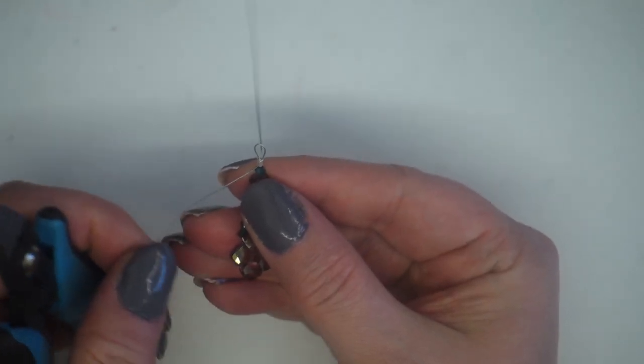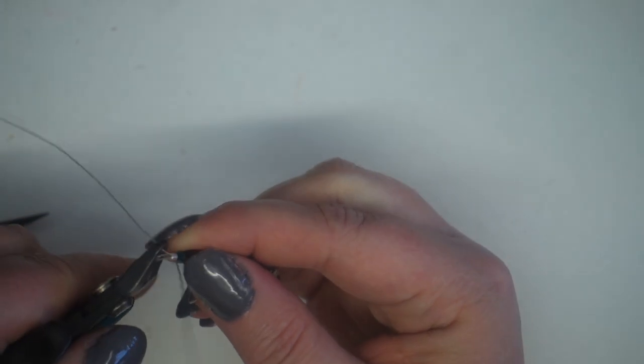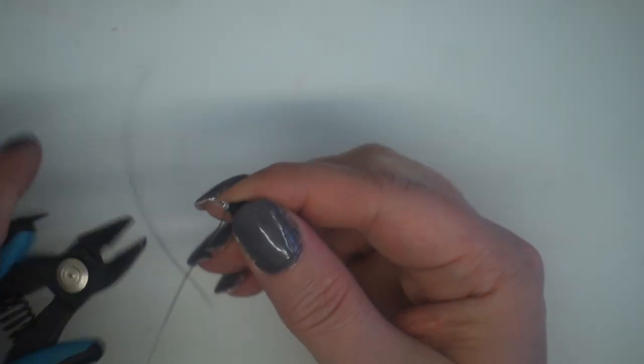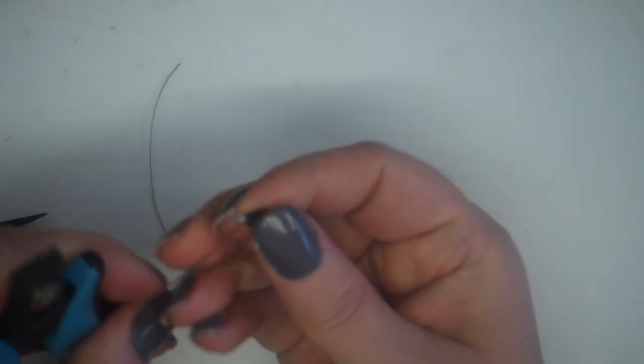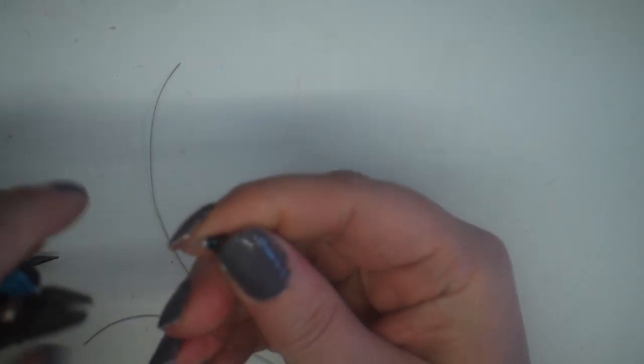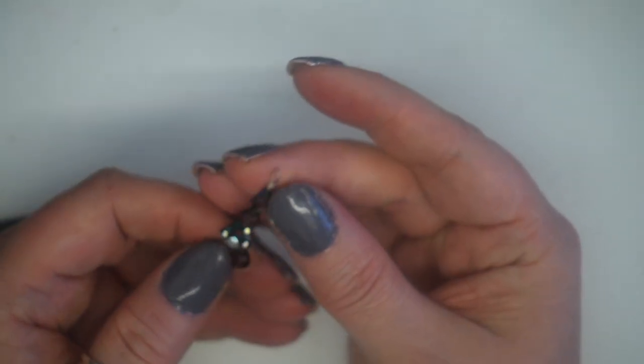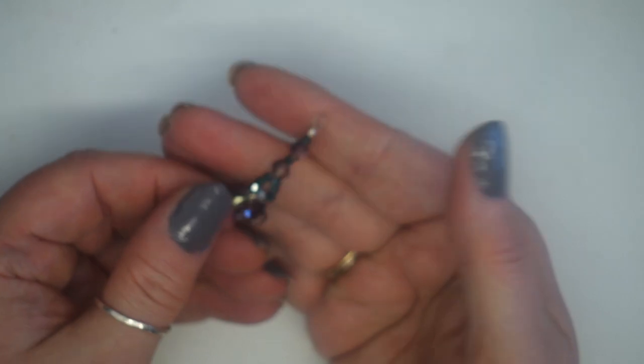So all we need to do now is get rid of these ends of beading thread so I'm going to come in with my flush cutters and just very carefully because you don't want to cut through the wrong part of the wire and there you have your component.